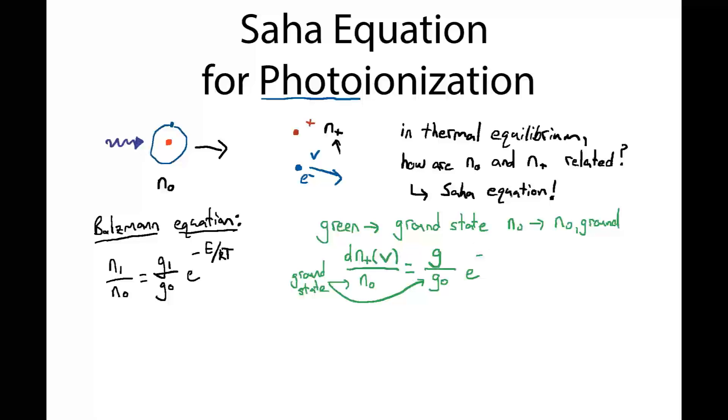Now what do I mean by energy? Well on the left side of this photoionization interaction, the energy is bound up in this hydrogen atom, E equals h nu. But after ionization, the energy is in two places. One portion of the energy went into the binding energy of that electron to this ion. So I'll use chi here to represent the binding energy, the potential energy required to take an electron in orbit around an ion and move it off to infinity.